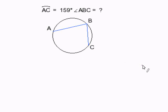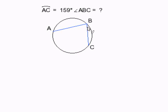How to find an inscribed angle when we are given its corresponding arc degree? We have to remember that the arc degree is always going to be twice the degree measurement of its inscribed angle. So what we need to do is divide our arc degree angle by 2, and that will give us the measure of this angle here.